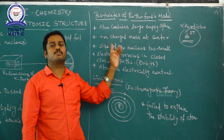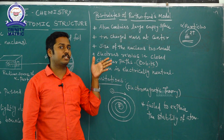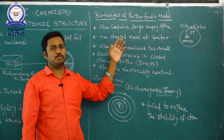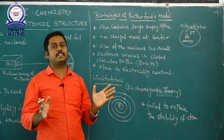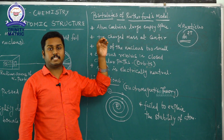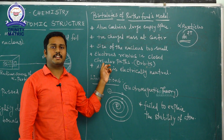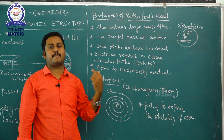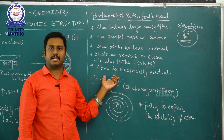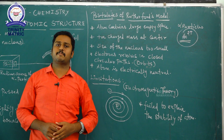In summary, the important postulates of the Rutherford atomic model are: the atom contains large empty space; the size of the nucleus is too small compared to the overall atom; the positively charged mass at the center is known as the nucleus; electrons revolve in closed circular orbits; and the atom is electrically neutral because it contains equal numbers of protons and electrons.